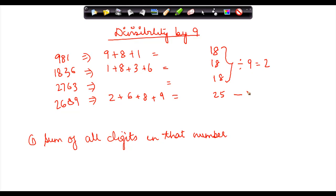The rule is that if the sum of all digits in that number is divisible by 9, then the number itself is divisible by 9.